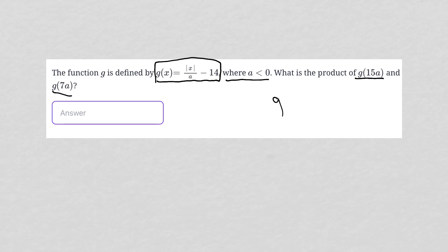Basically the question is asking what is g(15a) times g(7a). Well, it would be really great if we knew what a was. We know that a is less than 0.